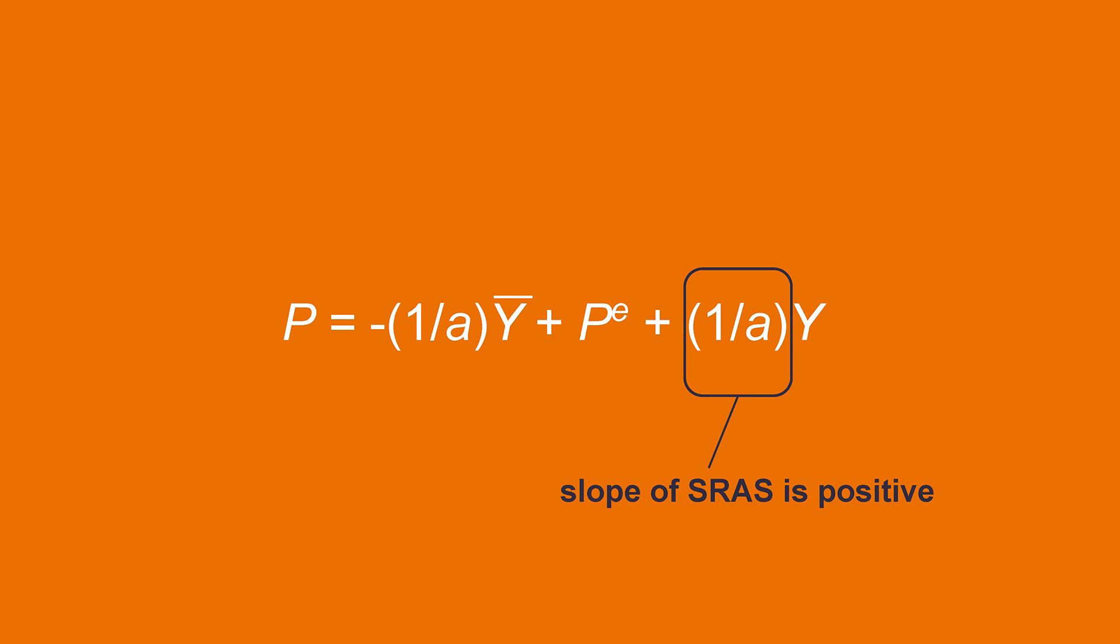The slope is essentially the coefficient in front of Y. This means that if Y increases by one unit, P will increase by 1 over A units. Because A is a positive constant, 1 over A is positive as well. A positive slope means short run aggregate supply is upward sloping.